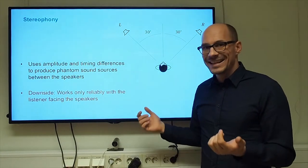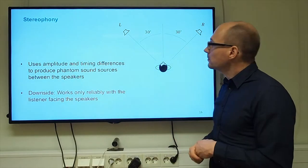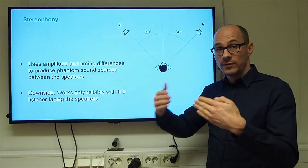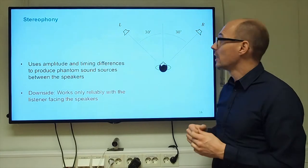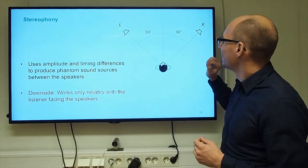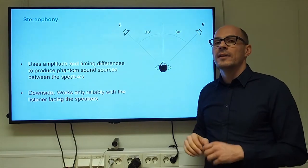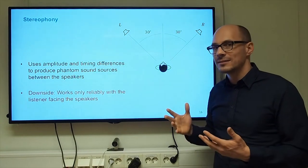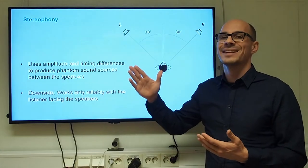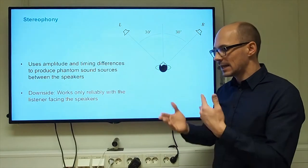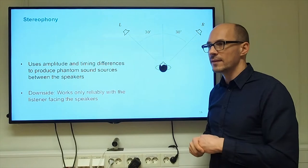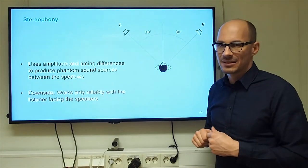If both loudspeakers radiate at a constant amplitude, but if you delay the signal of one loudspeaker, so let's say we're delaying the signal of the right loudspeaker slightly, then the user will localize the phantom source closer to the leading loudspeaker and the timing differences that are being applied are in the order of one millisecond or smaller.